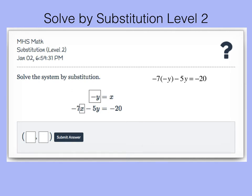Now we're going to multiply and negative times a negative is positive 7y minus 5y equals negative 20. Let's combine our like terms. And now we're going to divide both sides by 2. And we know the y value of this solution is negative 10.